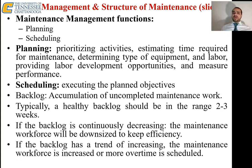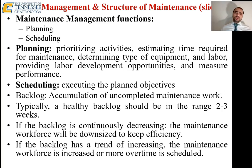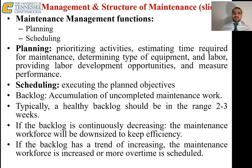A healthy backlog should be in the range of two to three weeks in a typical plant. If you have a smaller backlog — say a few days — that's not efficient because you're paying a lot for labor and not making effective use of the workforce. You also should not have too much backlog, like six or seven weeks, because the downtime becomes too long. The healthy range is two to three weeks.